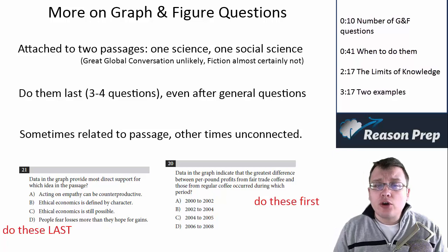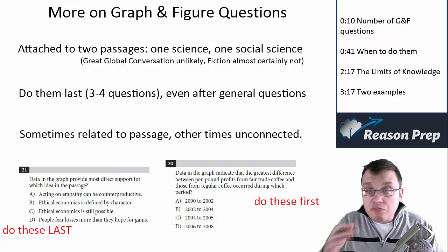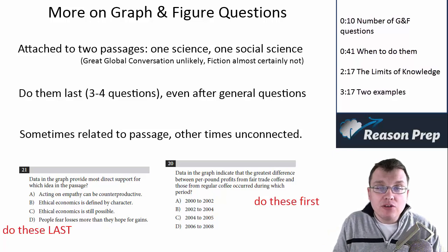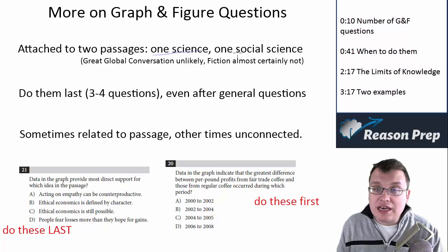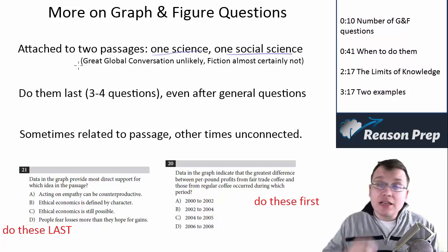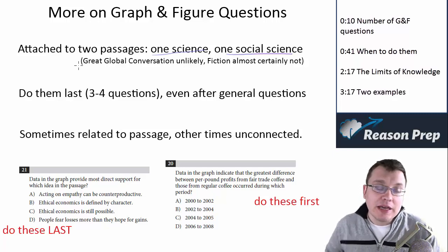Your graph and figure questions will be attached to two passages, one science, one social science. The passages with the figures can vary both in the order that they're in and which ones, but typically it's been so far in the four tests we've seen, one science and one of the social science or social studies passages. It's unlikely you'll see the figure in the Great Global Conversation passage and probably almost impossible to see it in the fiction passage.